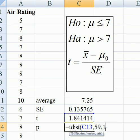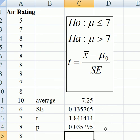So we put in 1 here, close brackets, and we find that the p-value is 0.035295.